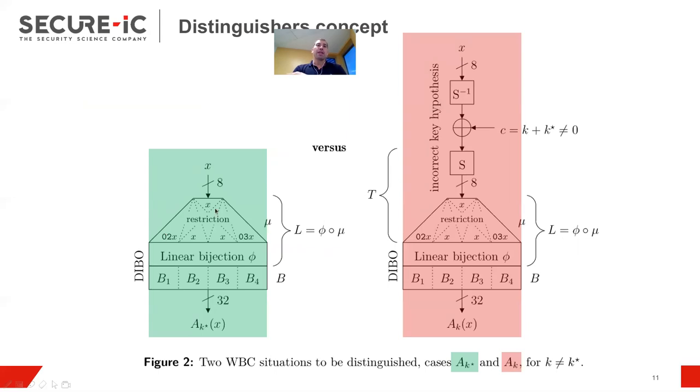Let me show it through a diagram. When we have the good key, so we manage to basically peel properly the T-box. So we are just left with the linear part here of the mix columns, and then the DIBO, phi and B here. Whereas for the incorrect key guess, we get an amount of different things. And so we have this C, which is non-zero, which is the difference between the keys and which is adding a lot of complex functions on top of the obfuscated table, which is over there.